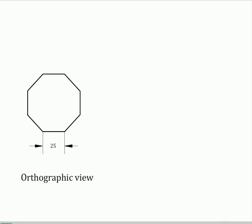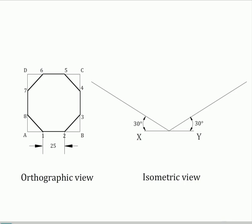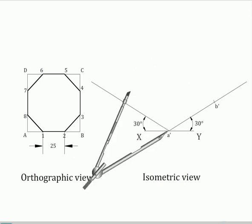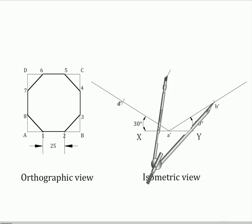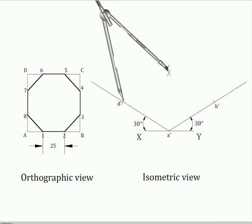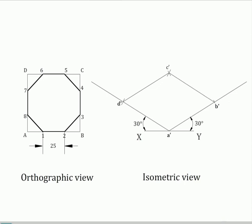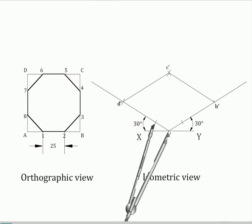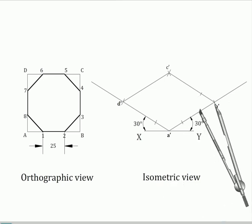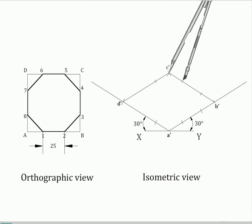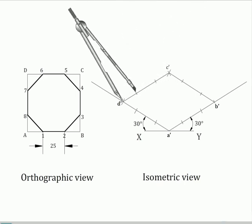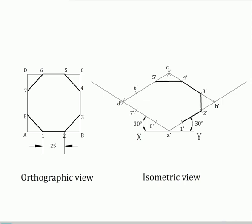To construct the isometric view, first enclose the octagon in a square box ABCD. Draw the two 30-degree making isometric axes and on them mark A'B' equal to AB and A'D' equal to AD. Complete the parallelogram A'B'C'D'. Now locate points 1' and 2' on side A'B' such that A1 equals A'1' and B2 equals B'2'. Similarly get the other points 3', 4', etc. Join the points 1', 2', etc. in sequence to complete the problem.